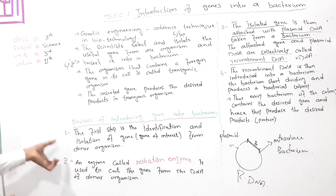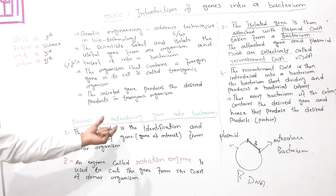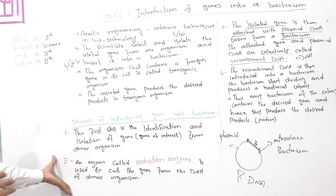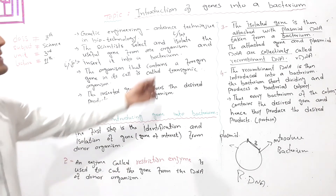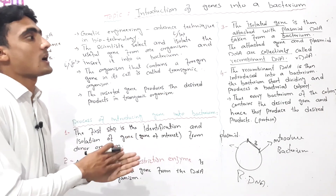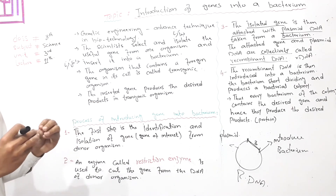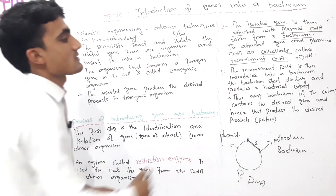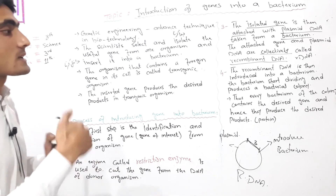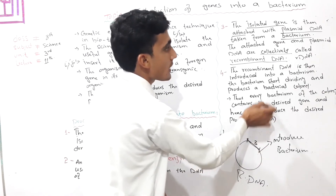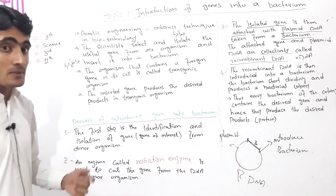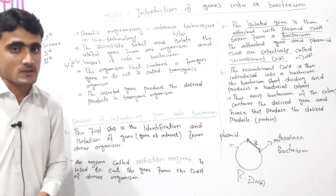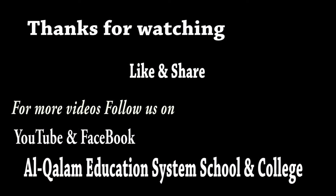In summary, the process of introducing genes into a bacterium involves four steps: first, identification and isolation of the gene from the donor organism; second, cutting the gene using restriction enzyme; third, attaching the isolated gene to the plasmid DNA to form recombinant DNA; and fourth, introducing the recombinant DNA into a bacterium so it divides and produces the desired products. That's enough for today, thank you.